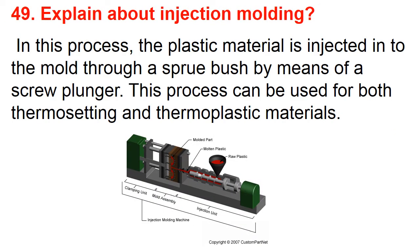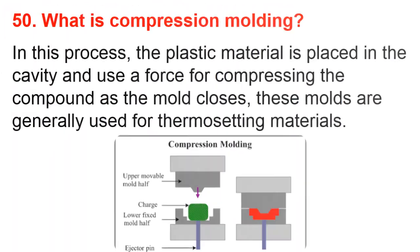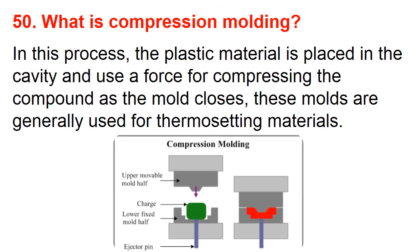Question number forty-nine: Explain about injection molding. In this process, the plastic material is injected into the mold through a sprue bush by means of a screw or plunger. This process can be used for both thermosetting and thermoplastic materials.